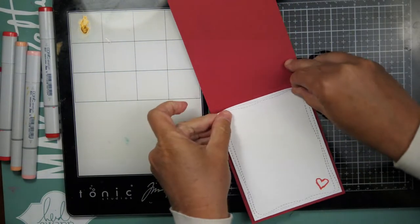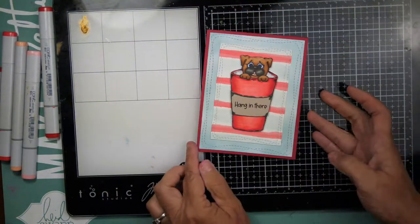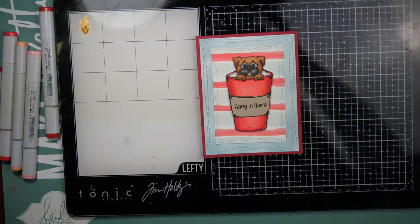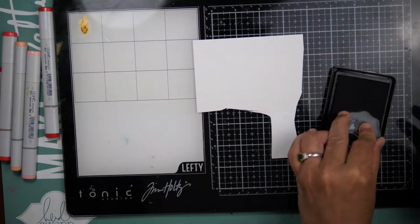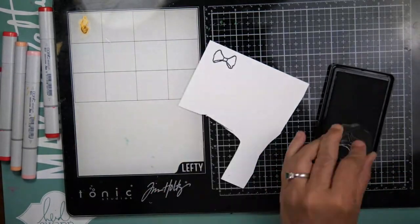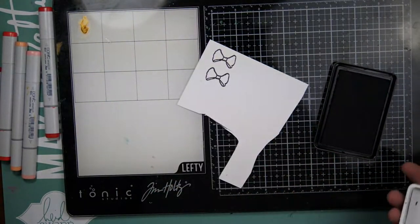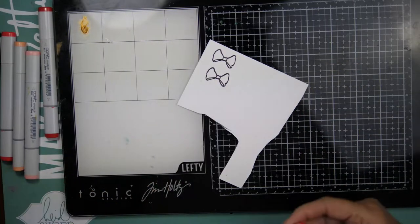And then this stamp set comes with an adorable bow, and I was looking at my little puppy and I just thought, you know, it really needs to be a girl. I just really wanted a girl, so I took the Gina K Black Jet Black Amalgam ink. I stamped out a couple of those bows.